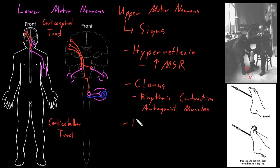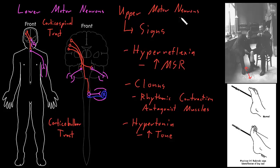The next upper motor neuron sign is hypertonia — increased tone of skeletal muscles — which is the opposite of the lower motor neuron sign of hypotonia. We don't fully understand why upper motor neuron dysfunction causes increased tone. One possibility is that it's related to hyperreflexia: when a doctor moves a patient's relaxed leg, the pulling on the muscles stretches them and activates the muscle stretch reflex, giving more resistance than normal. But we're not totally sure about this.